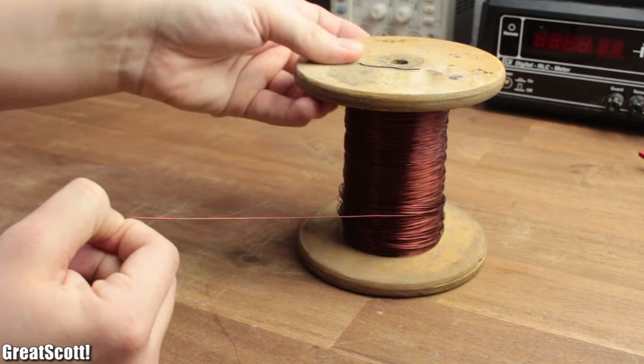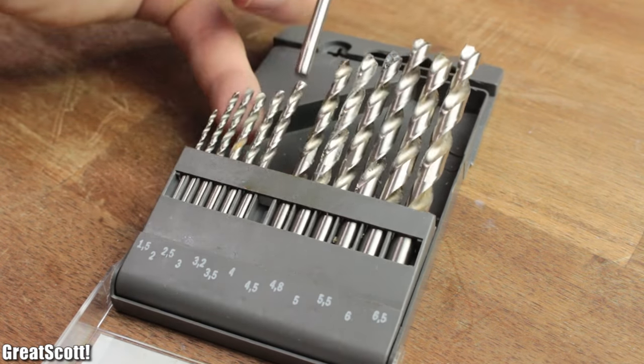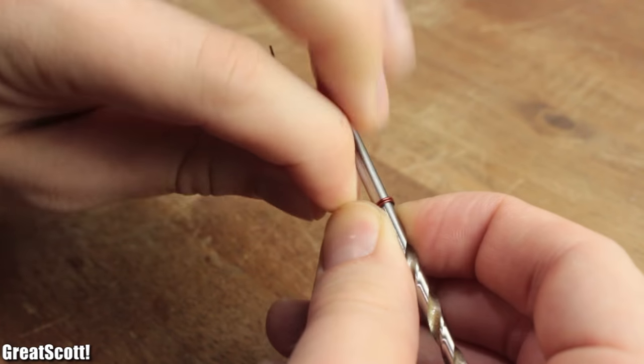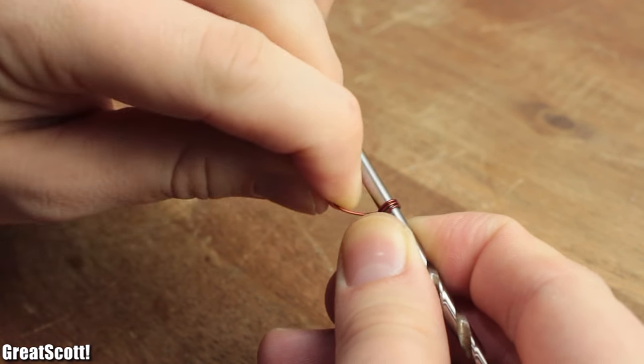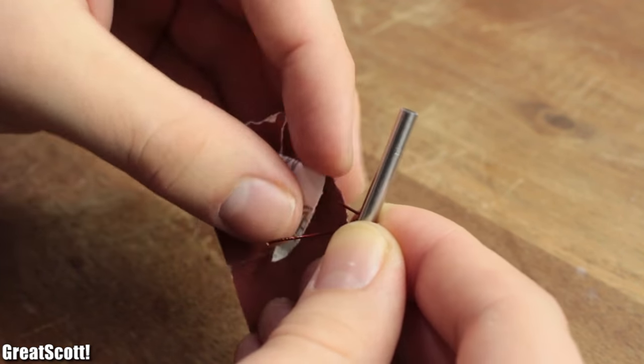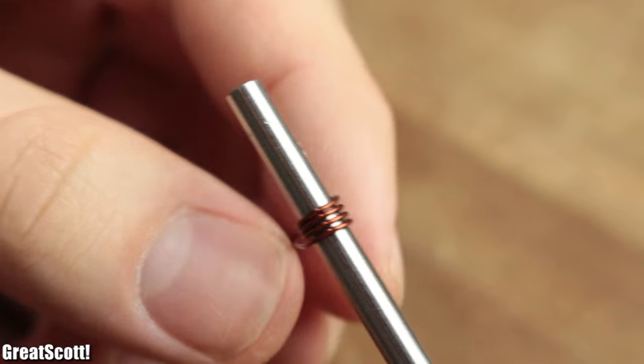I use 0.65mm enamel copper wire, and a 4mm drill for this. Just wrap the copper around the drill 4 times, while trying to keep everything tied together. Then use sandpaper to remove the isolation at the beginning and end of the coil, and you're all done.